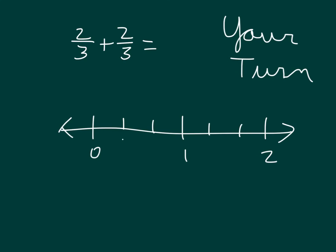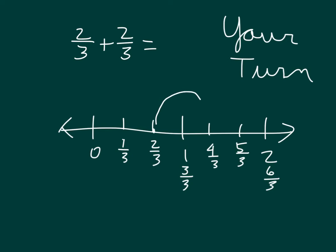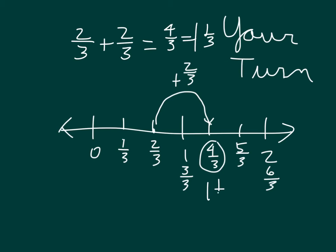One, two, and three — so that we are marking one-third, two-thirds; one would be worth three-thirds; four-thirds; five-thirds; and two would be worth six-thirds. Two-thirds plus two-thirds: we mark where we start on our number line at two-thirds, and then we're adding two-thirds. Did you remember to label? And then did you remember to circle your answer? Two-thirds — another third would bring us to one, and then another third would bring us to four-thirds, which is also one and one-third. Four-thirds does equal one and one-third.